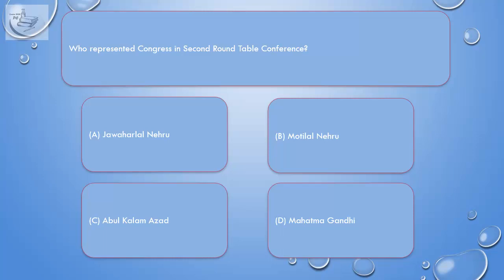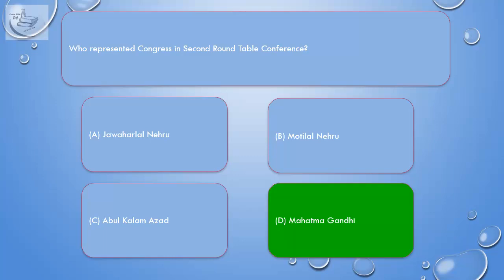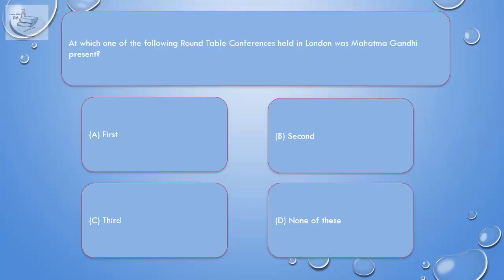Question: Who represented Congress in the second Round Table Conference? A. Jawaharlal Nehru, B. Motilal Nehru, C. Abul Kalam Azad, D. Mahatma Gandhi. Correct answer is D. Mahatma Gandhi.